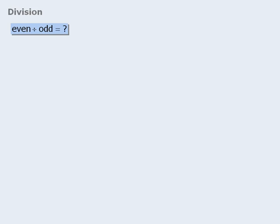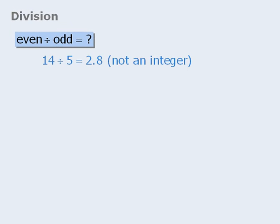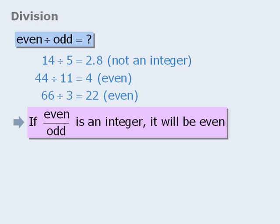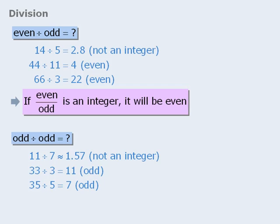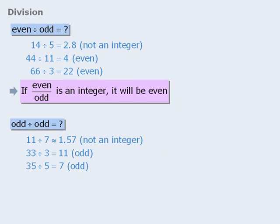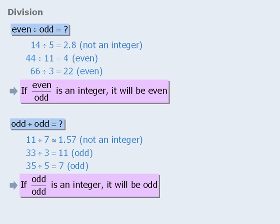What about an even number divided by an odd number? Sometimes the result is not an integer, but if it does yield an integer, then that integer will be even. Finally, what happens when we divide an odd number by an odd number? Sometimes we get a non-integer, but if the result is an integer, then that integer will be odd.